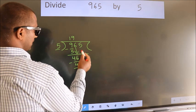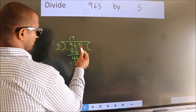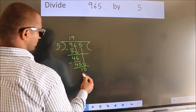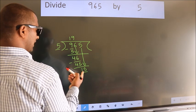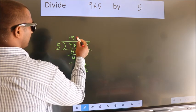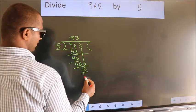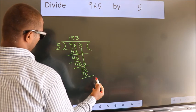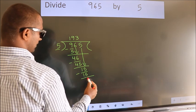After this, bring down the beside number. So 5 down, so 15. When do we get 15 in 5 table? 5 3s 15. Now we subtract. We get 0.